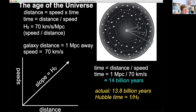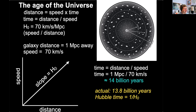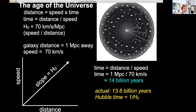The Hubble constant is one of the most important numbers in all of cosmology. There are major battles going on today about exactly what this number is. When I was a graduate student, the debate was whether this number was 50 or 200. Now the debate is whether it's 69 or 72. The fact that those two numbers don't agree is really, really important. We don't know what the answer is. The universe is about 14 billion years old, more precisely 13.8 billion years old.